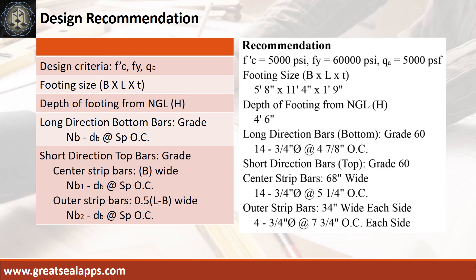Design recommendation: f'c equals 5000 PSI, fy equals 60,000 PSI, qa equals 5000 PSF. Footing size is 5 feet 8 inches by 11 feet 4 inches by 21 inches, depth from natural grade line 4 feet 6 inches. Long direction bars: 14 pieces 3/4 inch diameter grade 60 at 4 and 7/8 inches on center. Short direction center strip bars (68 inches wide): 14 pieces 3/4 inch diameter at 5 and 1/4 inches on center. Outer strip bars (34 inches wide each side): 4 pieces 3/4 inch diameter at 7 and 3/4 inches on center each side.